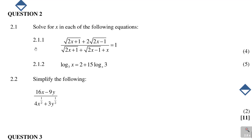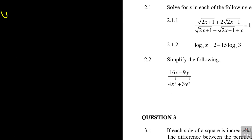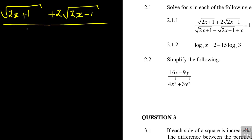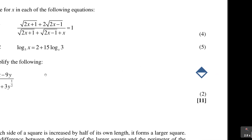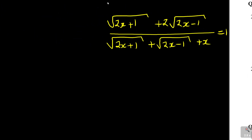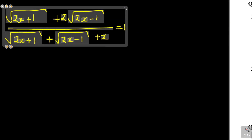Solve for x for each of the following equations. Question 2.1.1 — what was special about this one? It's: square root of (2x + 1) plus 2 times square root of (2x - 1), all over square root of (2x + 1) plus square root of (2x - 1), plus x, and this is equal to 1. This was 4 marks.